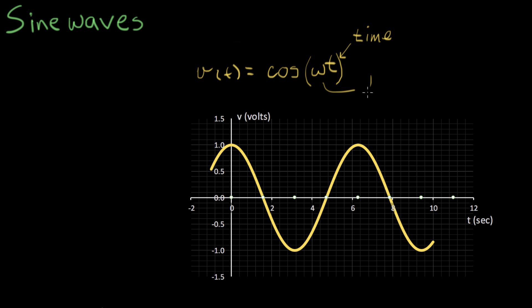So omega is one over time. And when we multiply those two numbers together, we get something that has no units, and then we can take the cosine of it. So this is referred to as a frequency. Something that has units of one over time is a frequency.